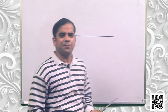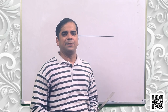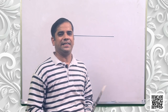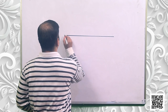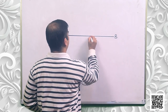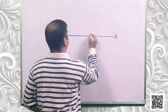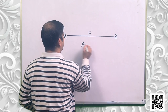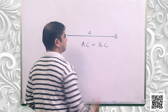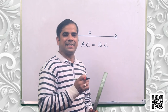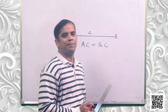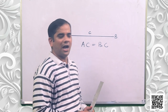So, as per the question, C lies between two points A and B such that AC is equal to BC. This is point A and point B, and suppose this is the point C so that AC is equal to BC. That means C divides line segment AB into two equal parts.